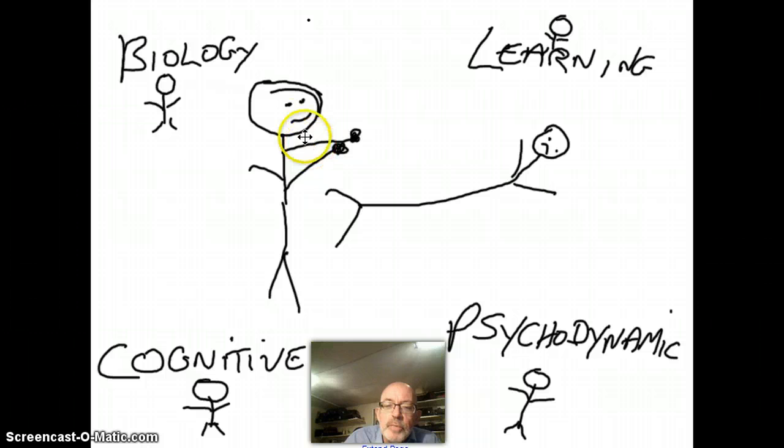This person here may, for example, have too much of the hormone testosterone, so that when provoked he lashes out, knocks this guy out. That's the reason for the behavior - the chemicals within the guy's body have actually made him do that.